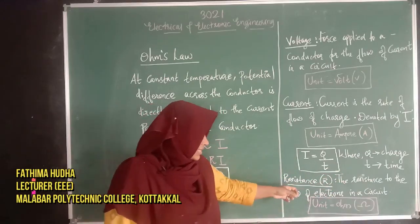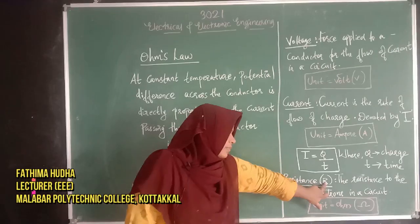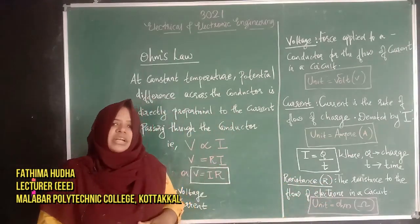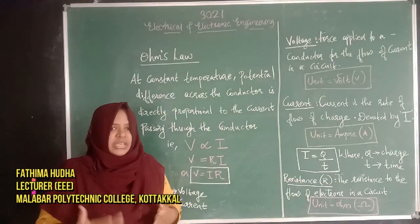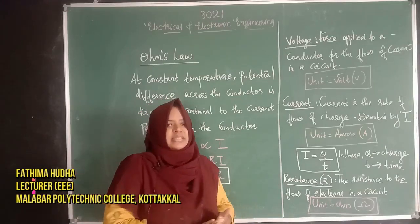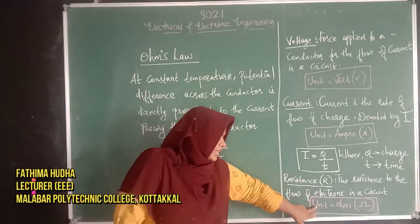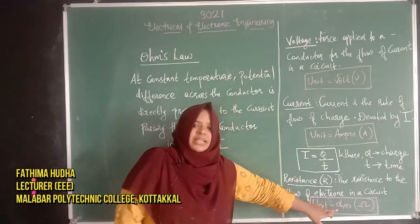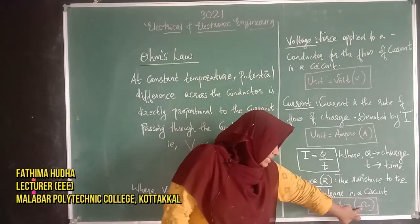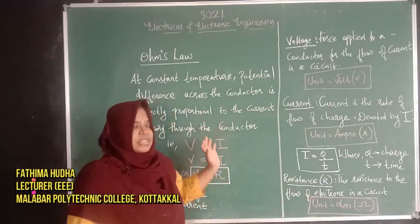The resistance is denoted by R. It is the opposition to the rate of flow of electrons in a circuit. The unit of resistance is the Ohm.